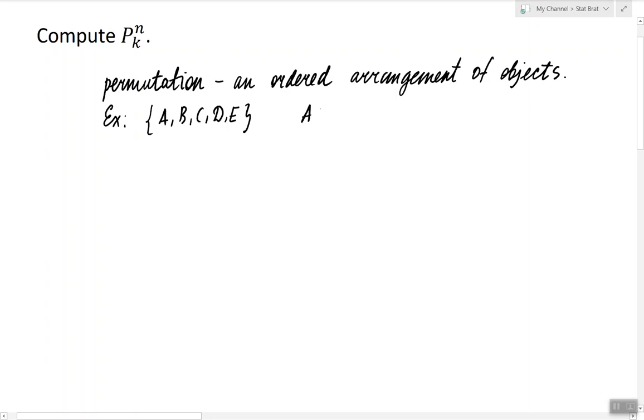So AD, for example, is a permutation of length 2. It's not the only one—there are many others such as BE and so on.